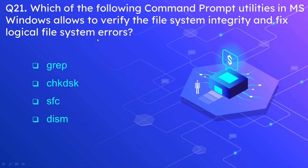Question number twenty-one: which of the following command prompt utilities in Microsoft Windows allows you to verify file system integrity and fix logical file system errors? The options are GRAP, CHKDSK, SFC, and DISM. The correct answer is CHKDSK, or check disk. If you know the abbreviation of the option, you already know the answer. The check disk utility is used to verify file system integrity and fix errors in the logical file system.